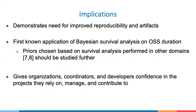Our study implies that more studies need to provide research artifacts. Although our results were qualitatively similar to those of the original authors, it is suspected that variation in approaches to data retrieval and analysis tools used cause quantitative discrepancies. We therefore call for researchers to improve the reproducibility of their study by providing artifacts. Secondly, to our knowledge, this is the first application of a Bayesian approach to survival analysis on open source software duration. Prior distributions were chosen based on survival analysis done in other domains, but more investigation should be done as to whether these priors are appropriate for the domain and whether the models accurately predict durations of different datasets. Finally, these results keep organizations, coordinators, and developers informed, giving them confidence that the projects they rely on, manage, and contribute to will continue to be healthy and survive.